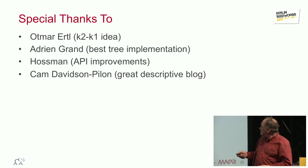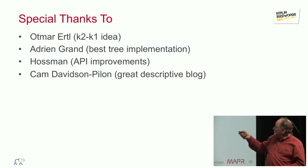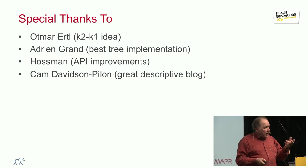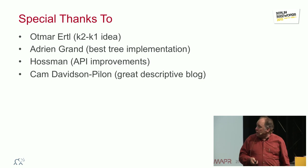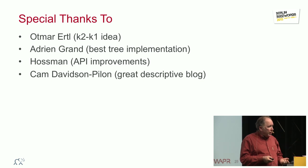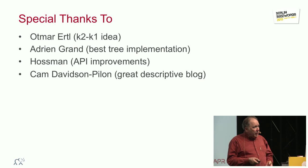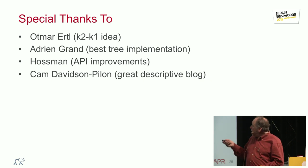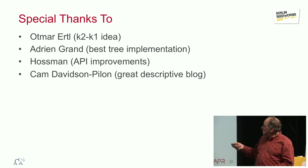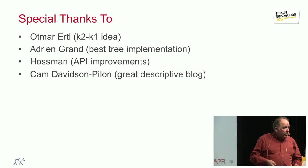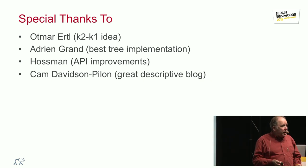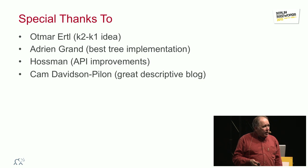I'm going to move to the questions quickly, but before I do, here's a few credits. Otmar Ertl gave the idea of that K-to-Q curve. Adrian Grand did the fastest current implementation in a tree sort of thing. Hoss from the Solr community, he has provided some API improvements. Cam Davidson produced some very interesting public discussions of this. And, of course, there's one name missing here.